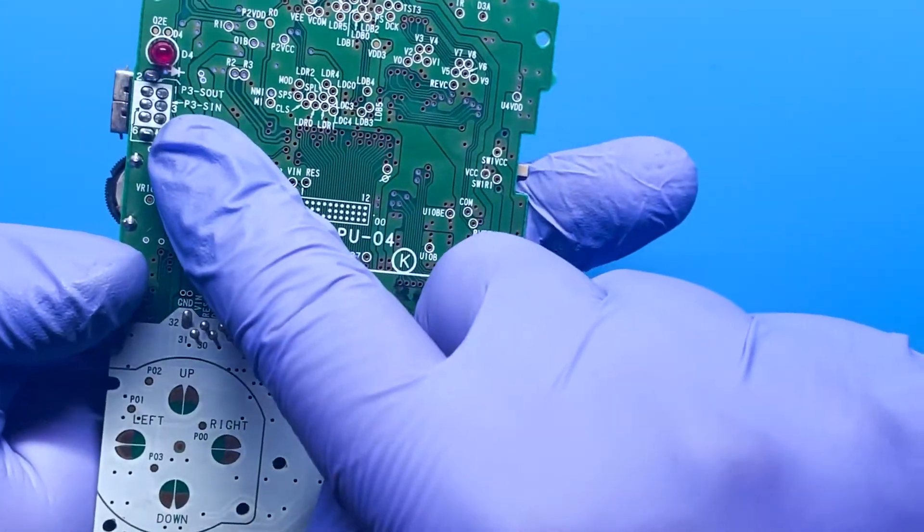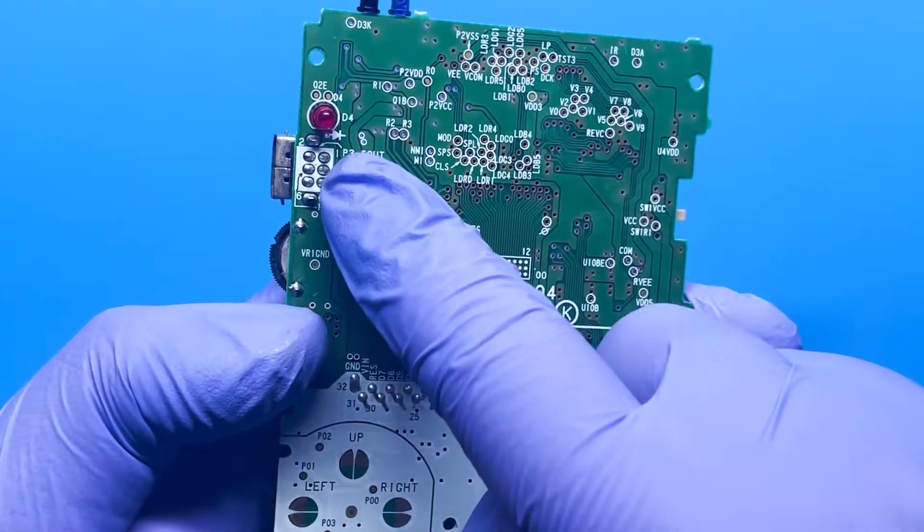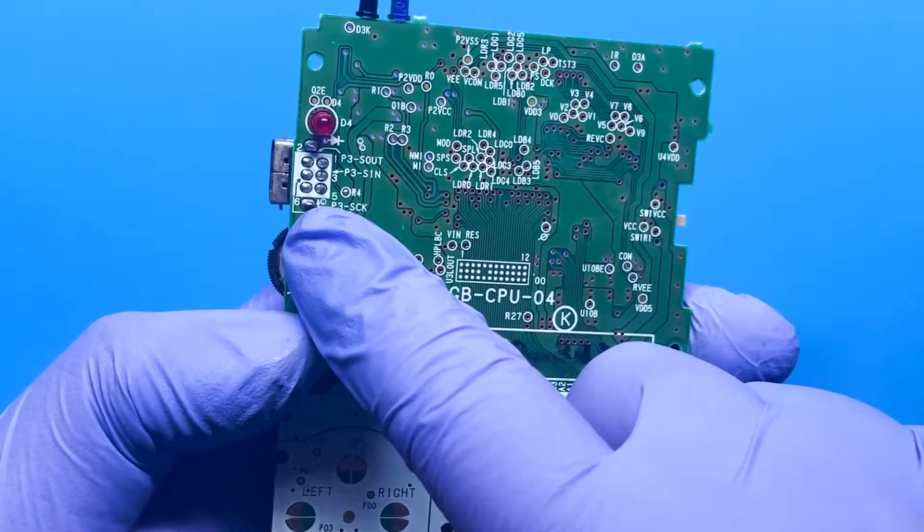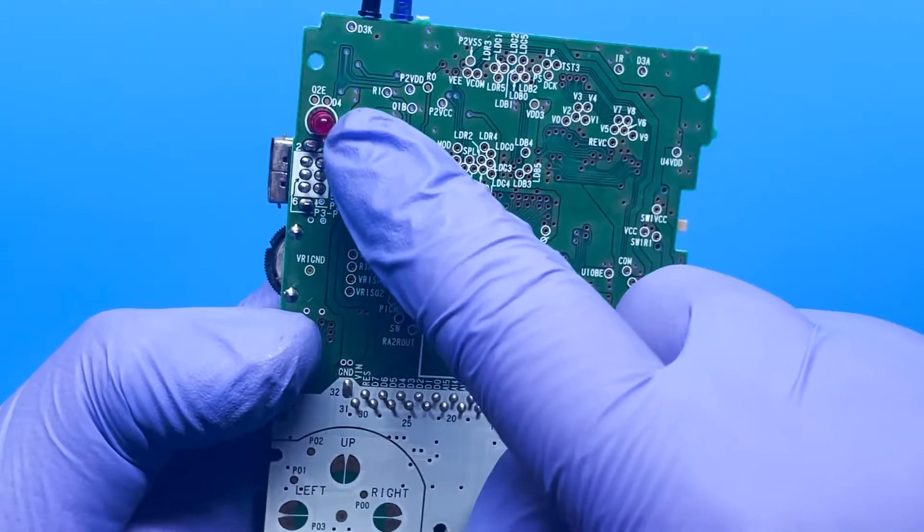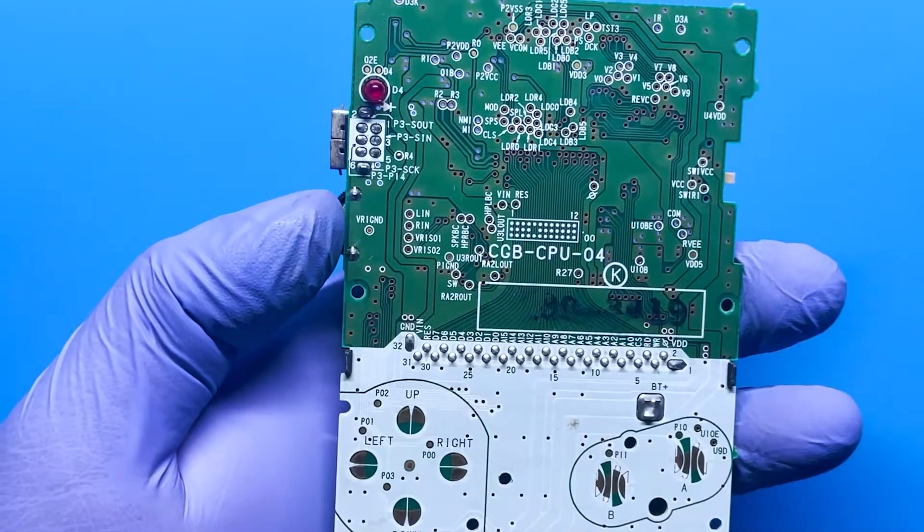We're simply just going to go ahead and remove the solder from these six joints here, as well as the one below here and the one above here. Just be careful with this LED to not melt it. I'm going to go ahead and heat up my desolder gun and let's go ahead and remove this piece.